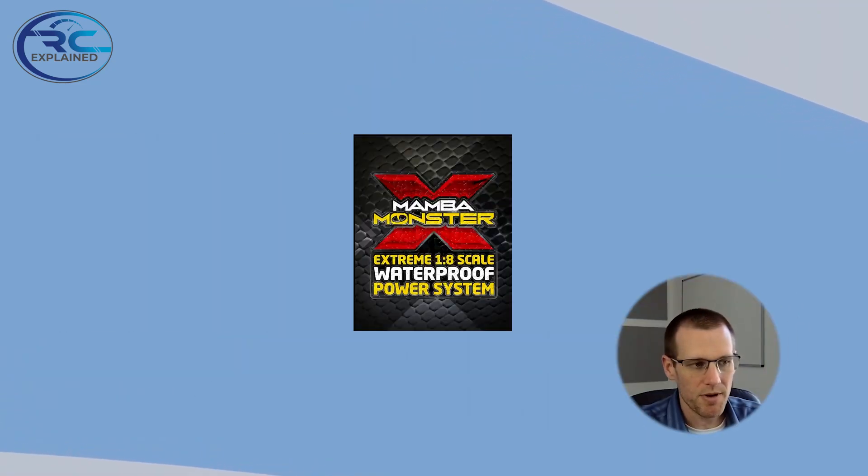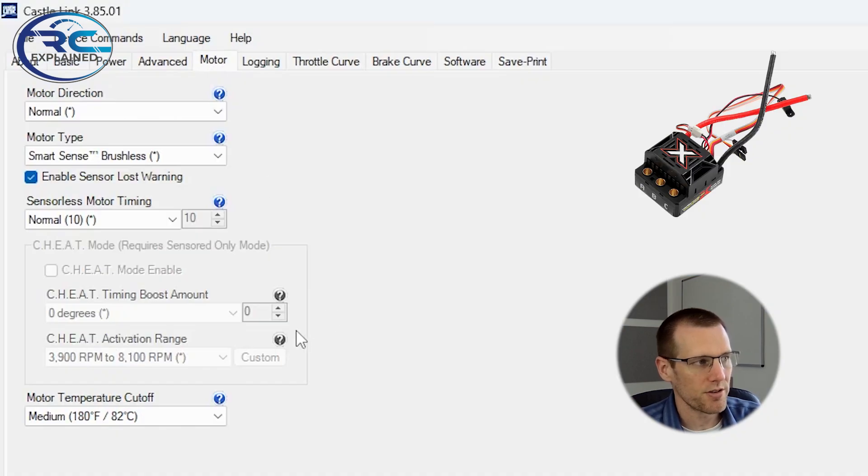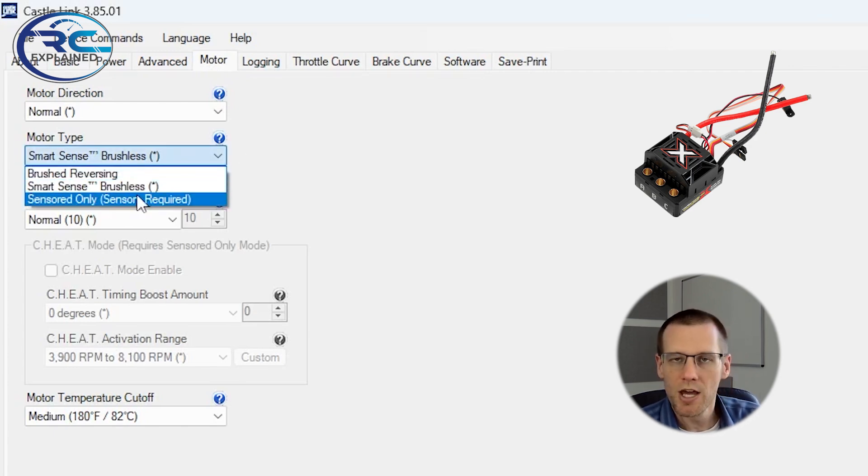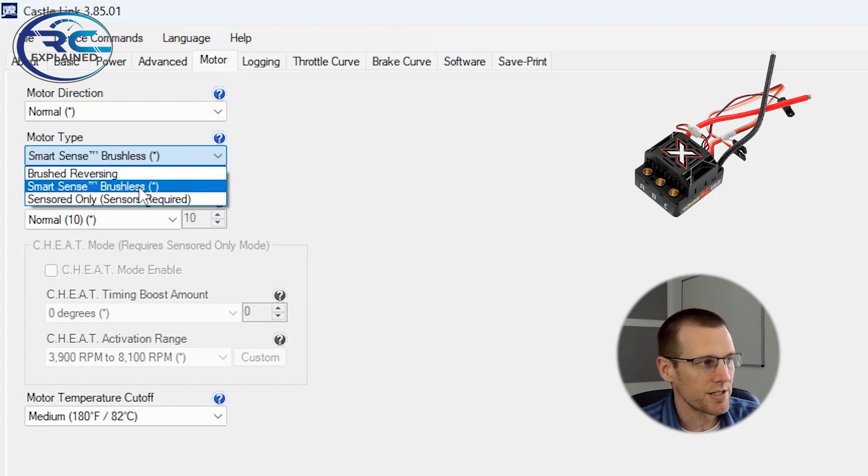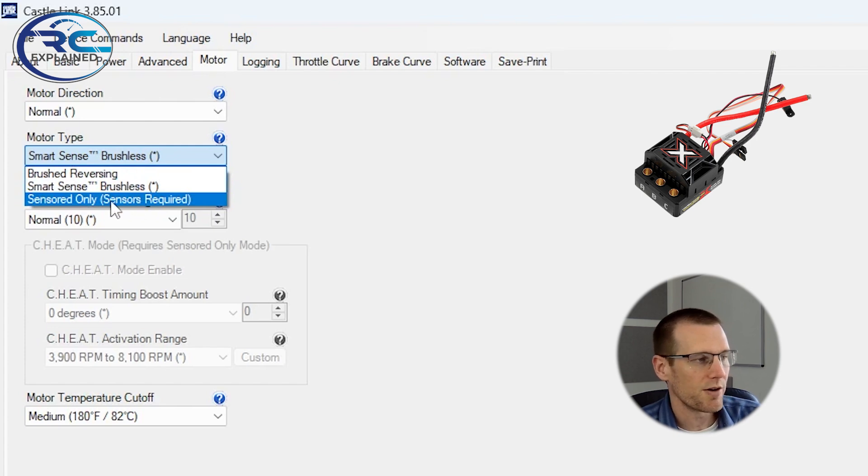Here we're taking a look at the Mamba Monster X brushless unit. And this is for 1/8 scale vehicles. Now we're going to look under the motor tab. I selected this speed control for a very specific reason, because under this motor type option, there's brushed operation that we can select, there's smart sense operations, and then there's censored only operation. And in this video, we're saying essentially do not select this censored only type of operation.